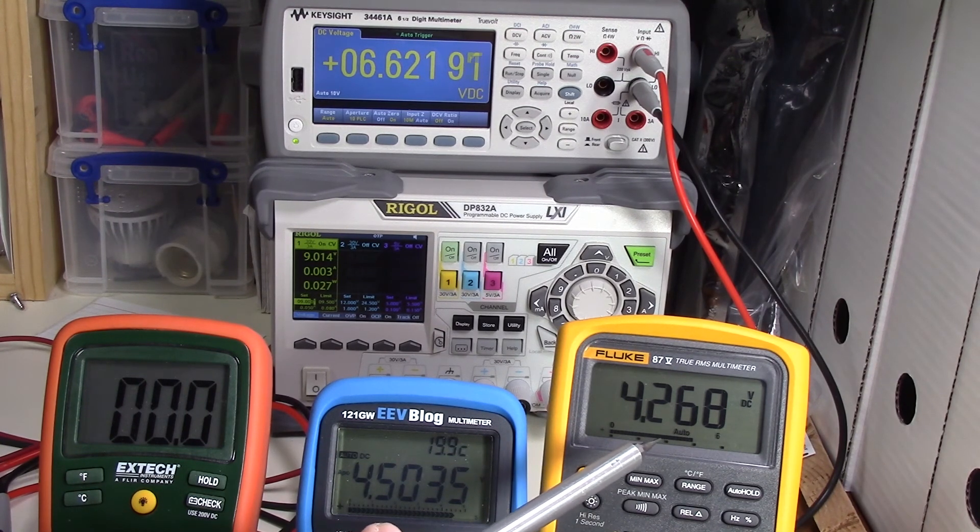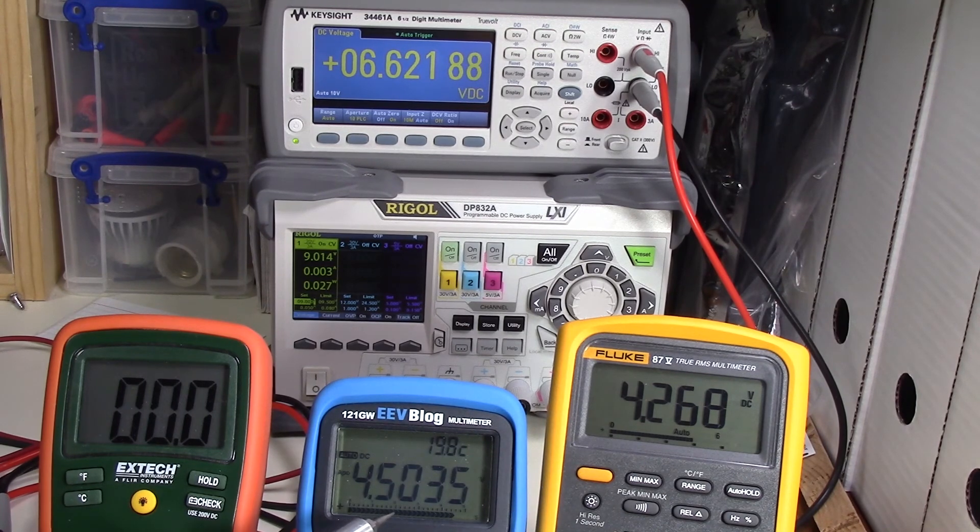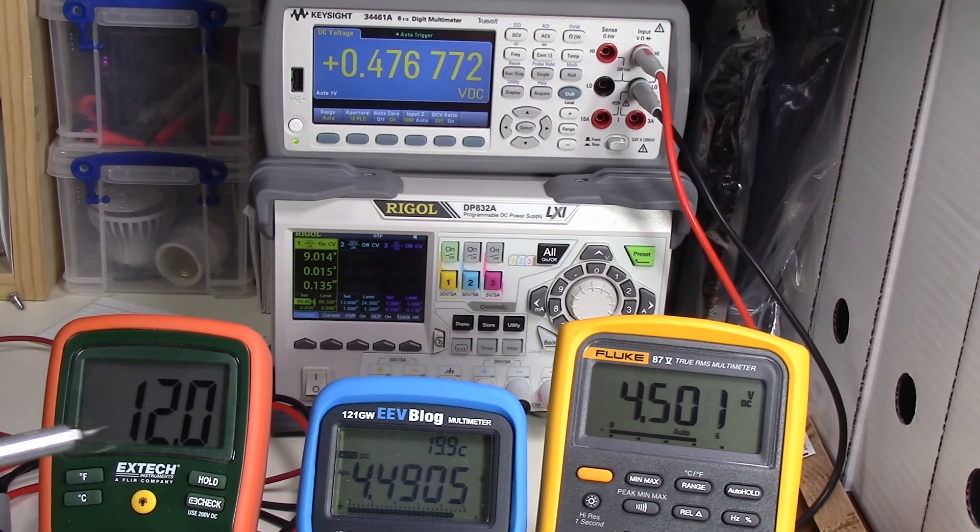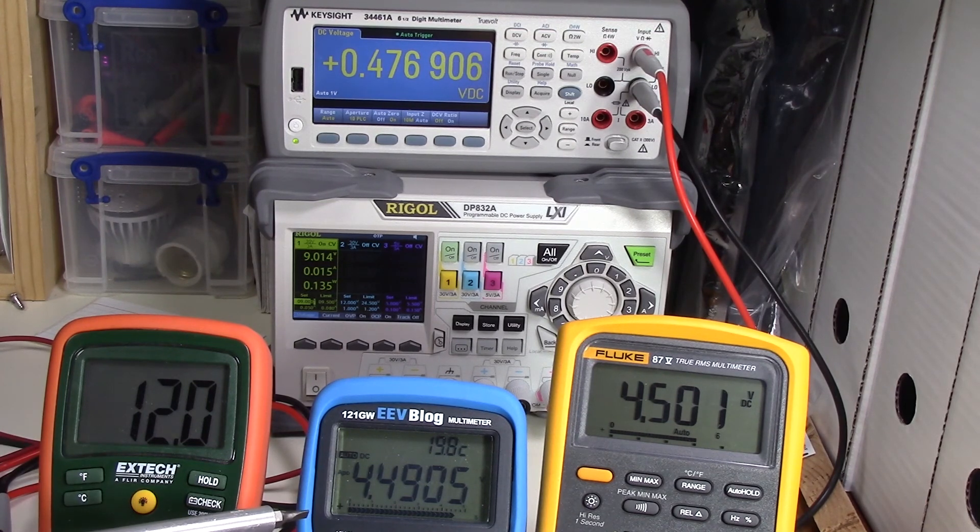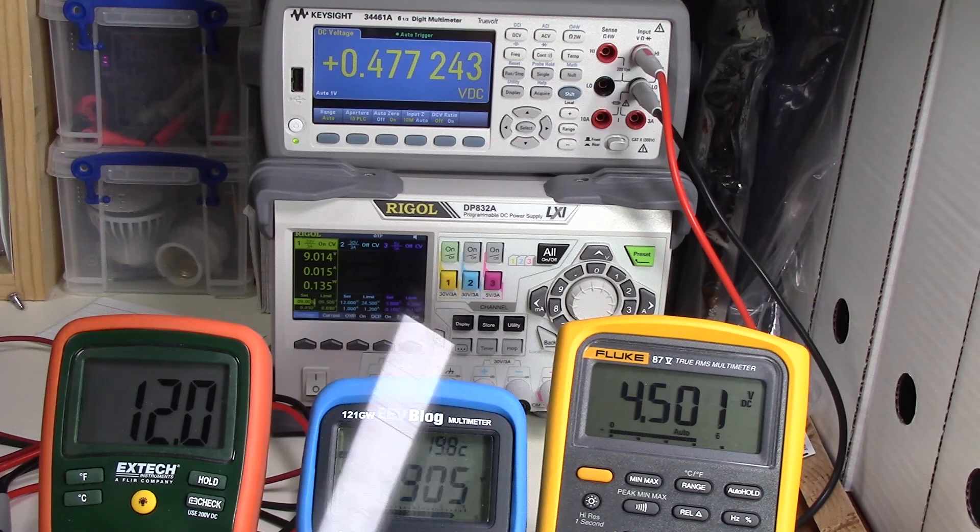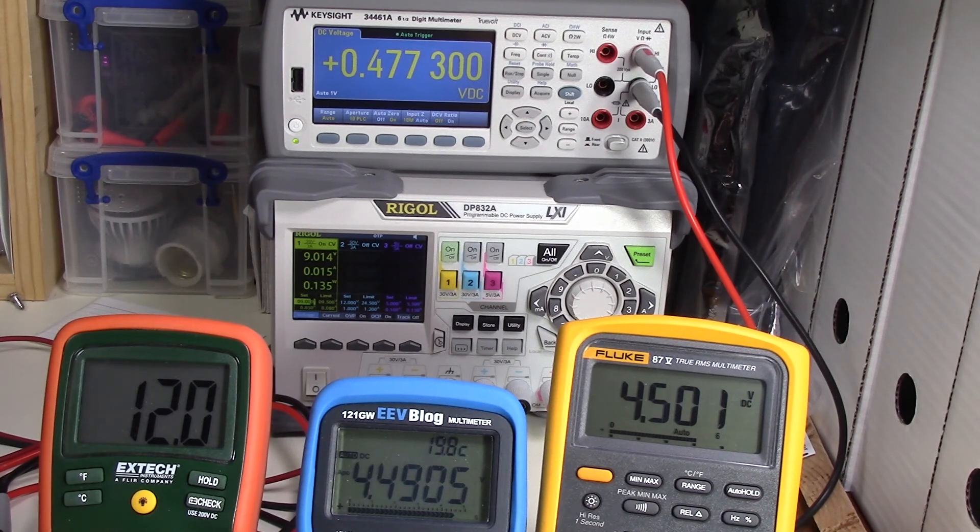The EEV blog meter is measuring the reference voltage, and the Fluke is measuring the input voltage. The Keysight multimeter is measuring the output voltage at the comparator. So if you follow the equation, Vout equals V reference minus Vin times the gain. Our output voltage is less than VCC because of the LED, which has about a 2.4 volt drop across it. I'm going to rotate the potentiometer and we'll watch this change.